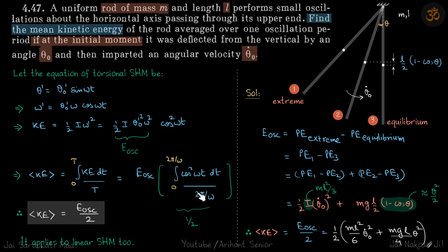So if you solve this, this comes to be ½. So average kinetic energy for one time period is energy of oscillation by 2. Same thing applies to linear SHM also.